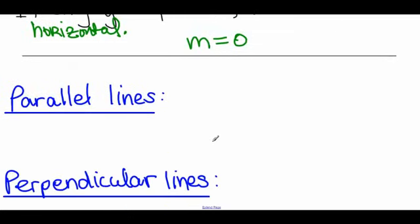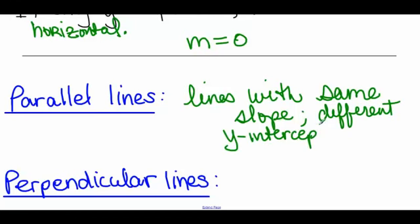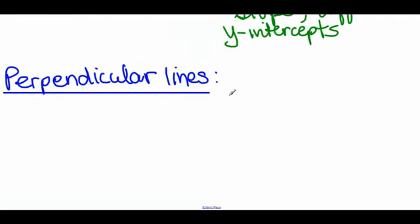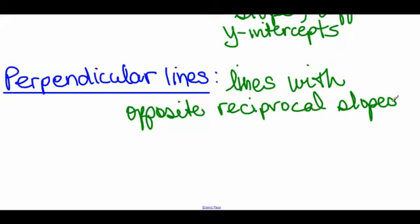Parallel lines, and this is also something that we worked a little bit with in the last section, we decided if we had lines that were parallel or perpendicular. Parallel lines are lines with the same slope, different y-intercepts. Perpendicular lines are lines with opposite reciprocal slopes. Remember, the way we determine that is multiply the two slopes together, and if it equals negative one, then the lines are perpendicular to each other.